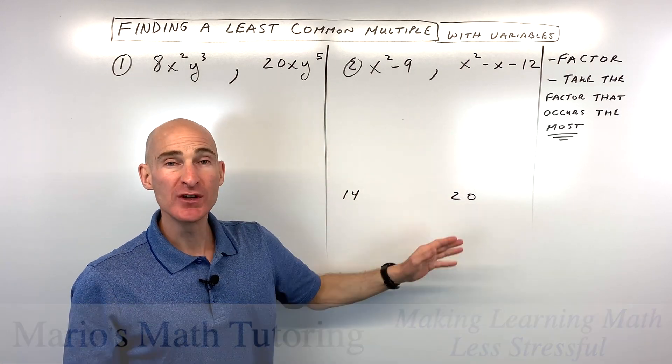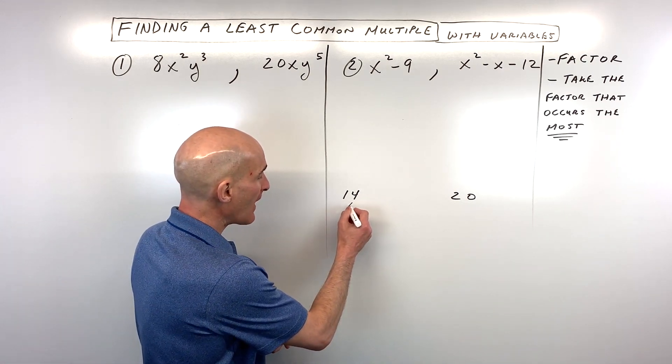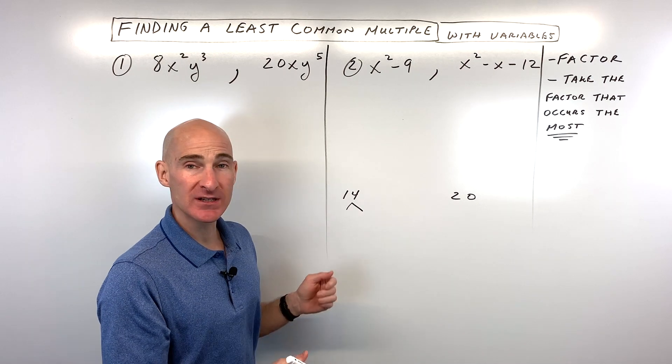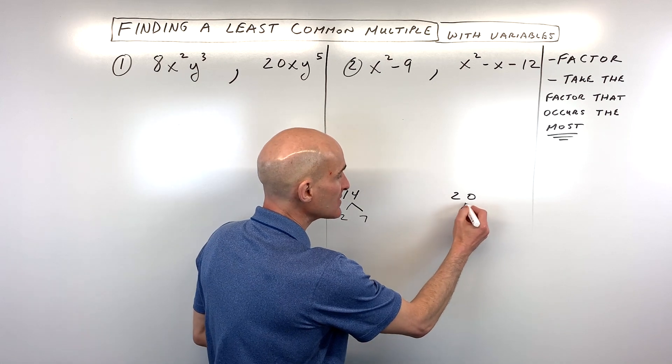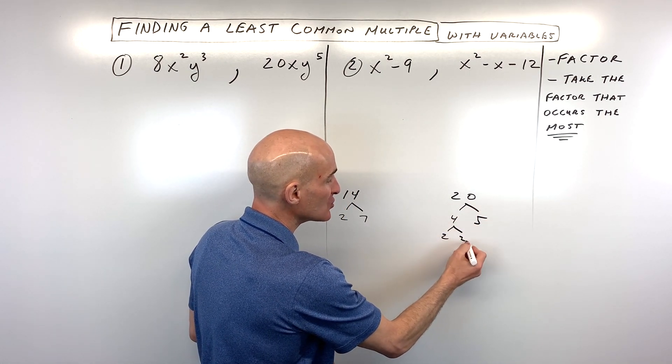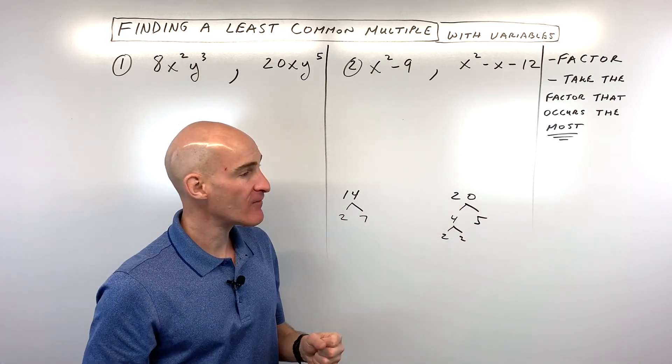The first thing you want to do is find out what are the factors of the number. When you talk about factors, we're talking about what numbers multiply together to give us 14. Well, 14 is 2 times 7, and 20 is 4 times 5, and we know that 4 we can break down into 2 times 2. So you're breaking it down into the smallest components, the prime factors.